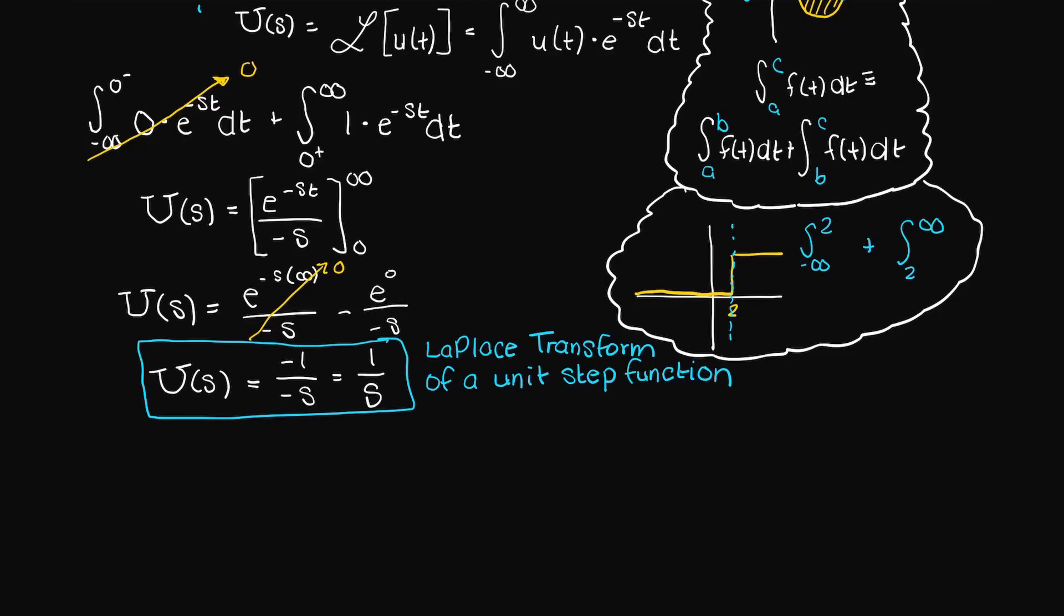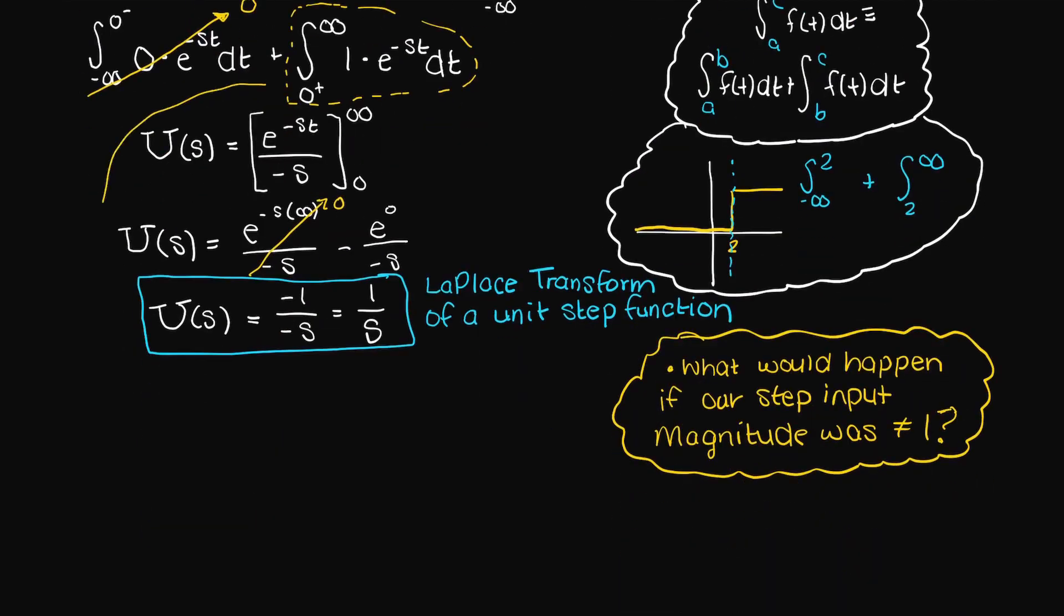Earlier I showed you how you would proceed if you had a step input signal beginning at a time that is not zero, but what would happen if our step input signal was some other value, some other magnitude other than one?